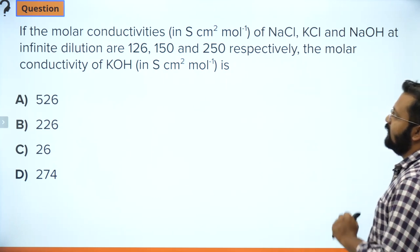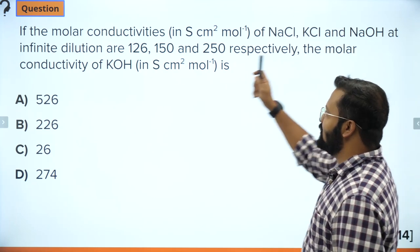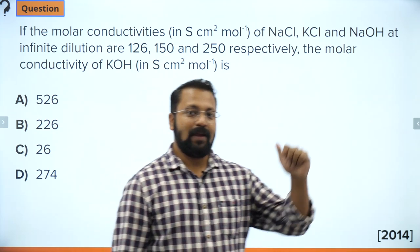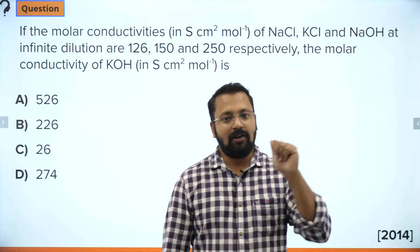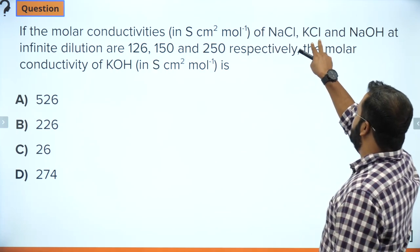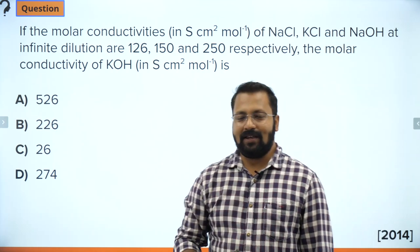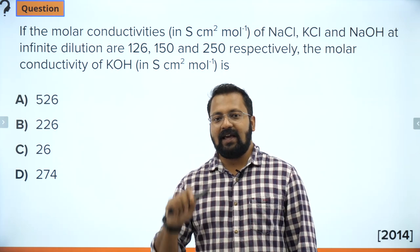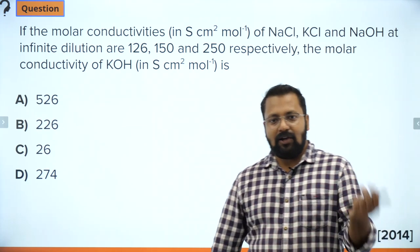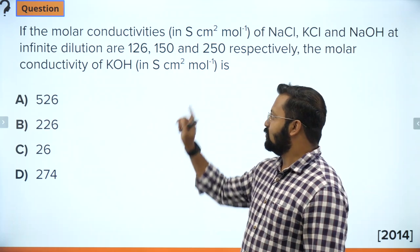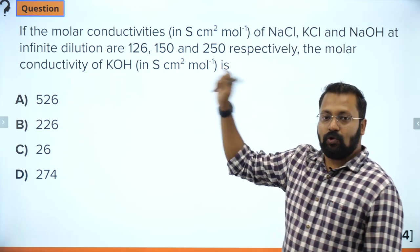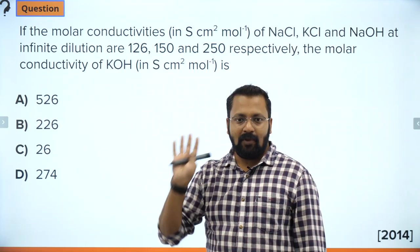The next question asks for the molar conductivity of KOH at infinite dilution using Kohlrausch's law, given values for NaCl, KCl, and NaOH. This is solved the same way as the HOAc problem - rearrange the given values using simultaneous equations to obtain the value for KOH. Please post your answer in the comment section.